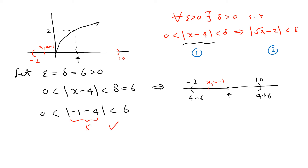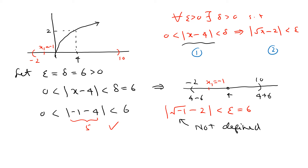But what happens to the other side? For x = −1, we need |√(−1) − 2| < 6. But this is not even defined — the square root of a negative number is undefined. So the right-hand side is false. The left-hand side is true but the right-hand side is false, so the implication does not hold. That means this proof is completely wrong.